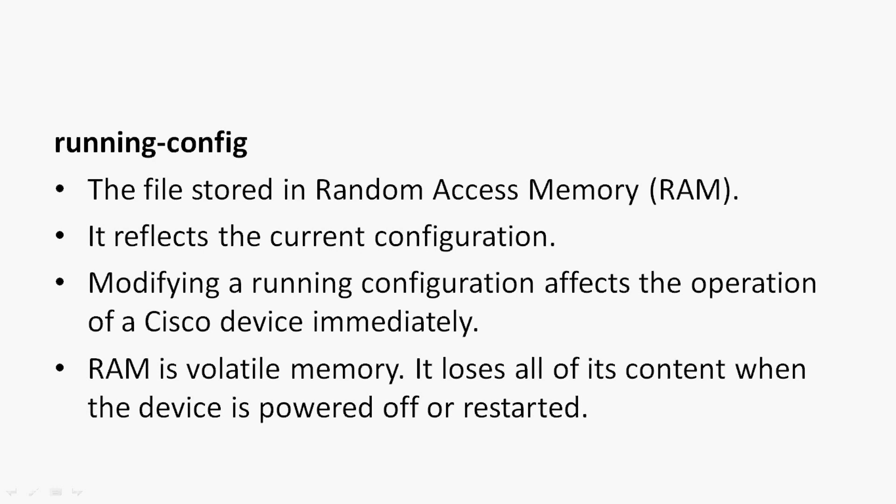Modifying a running configuration affects the operation of a Cisco device immediately. RAM is a volatile memory — it loses all of its contents when the device is powered off or restarted, so we can say it's a volatile RAM.